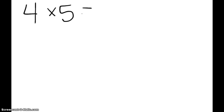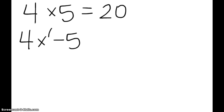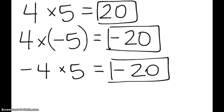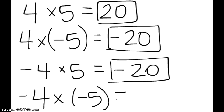Let's try a couple more. 4 times 5: 4 groups of 5 is 20. What about 4 times negative 5? 4 groups of negative 5 means you have 20 negatives, so that's negative 20. Negative 4 times positive 5: you can't have negative 4 groups, so that's negative 20. And negative 4 times negative 5: can't have negative 4 groups of anything, so we do the opposite — 4 times 5 — which is 20.